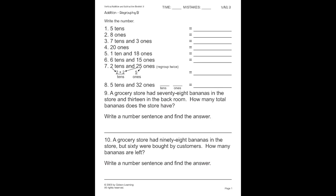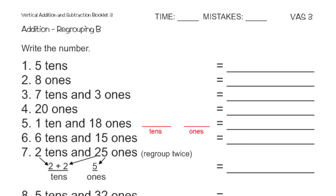We're going to start with our first sample question, number 5. I have 1 ten and 18 ones. I'm going to put a little organizer up here that helps me stay organized — a tens and ones column. I'm going to put in my 18 ones and my 1 ten, just like the instructions said.